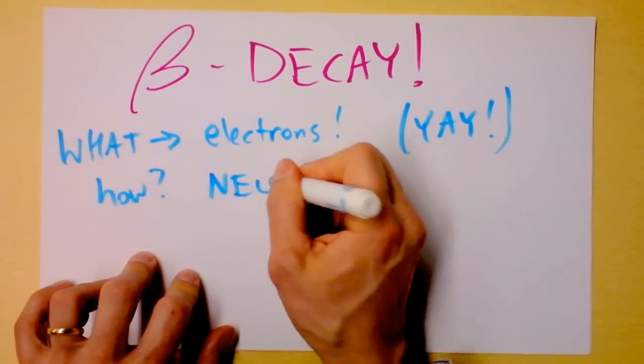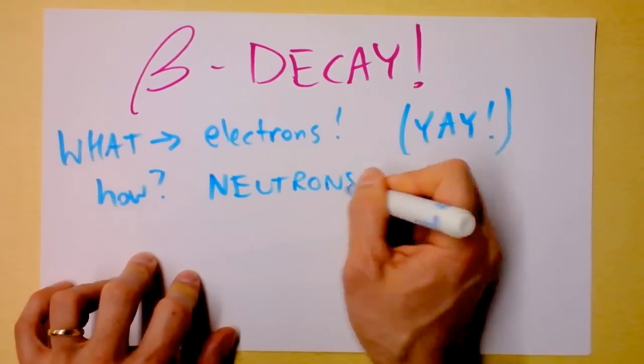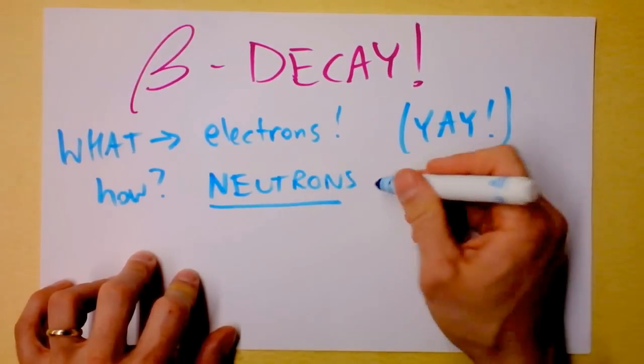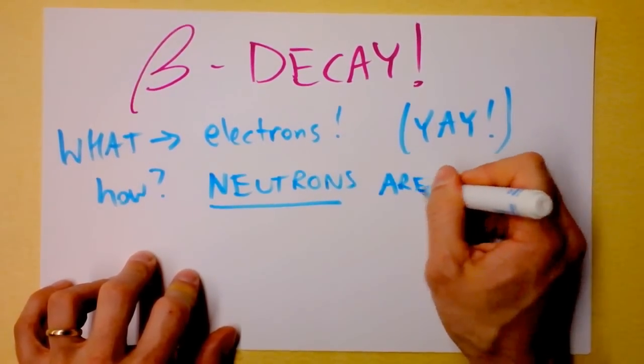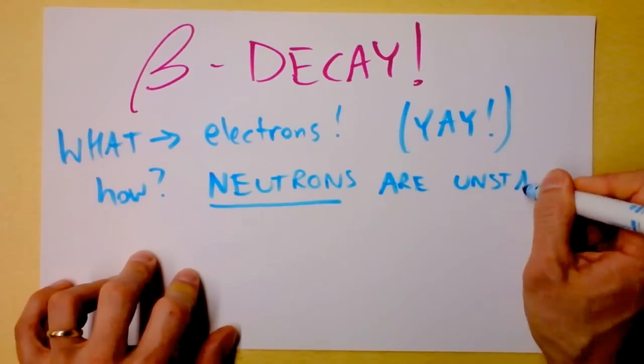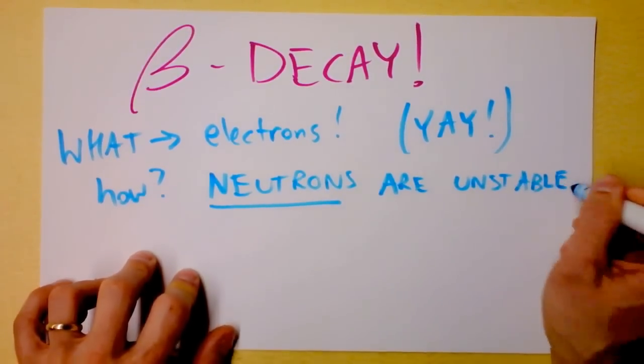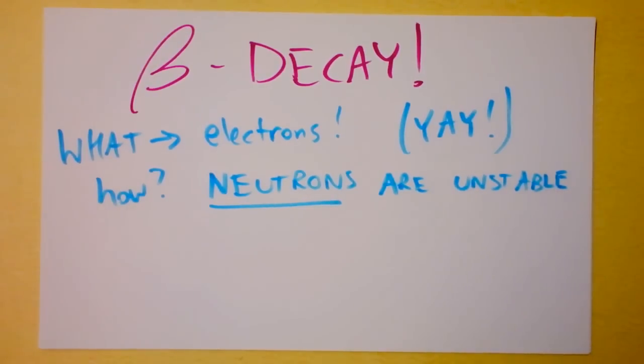And the answer is neutrons. Neutrons that you thought you trusted, they are unstable. They do not like existing. A neutron is unstable. I don't know if you heard me say that, but a neutron itself is actually unstable.